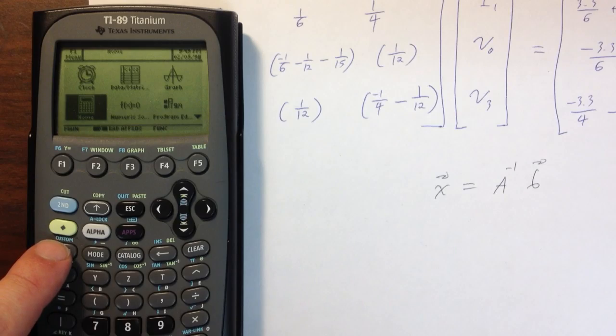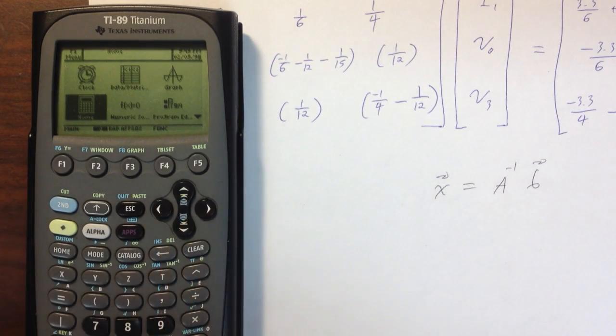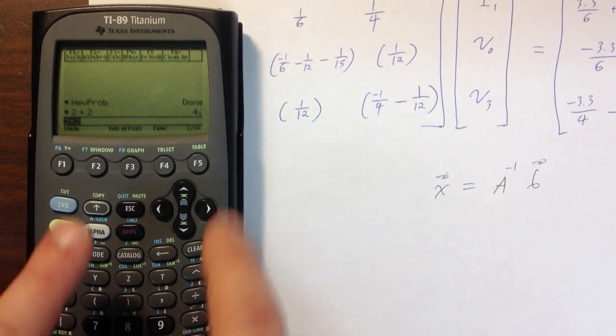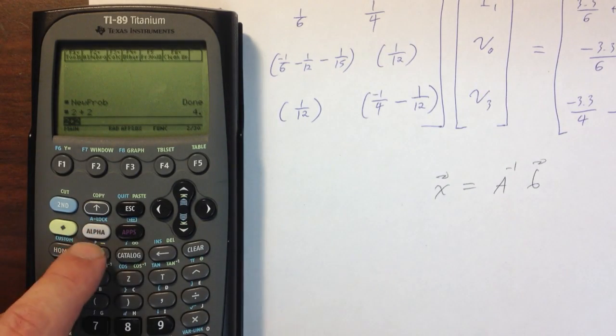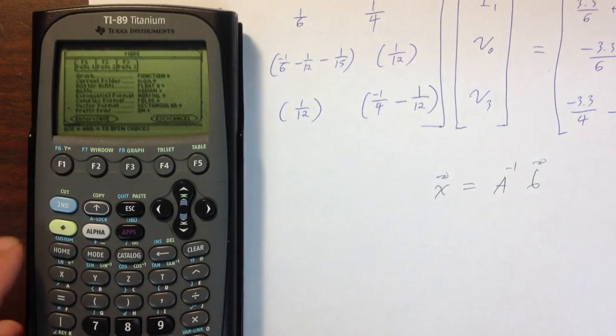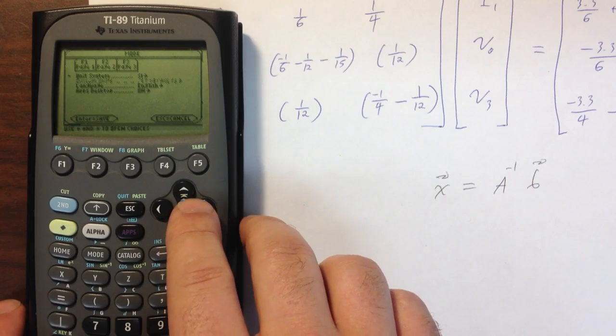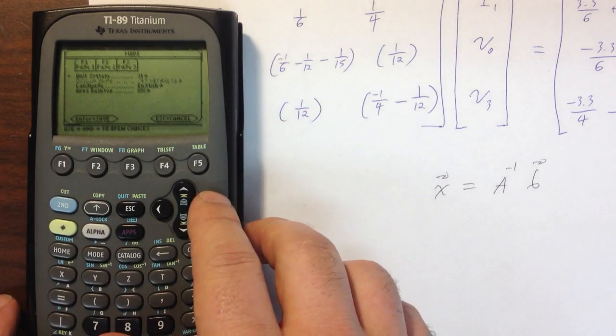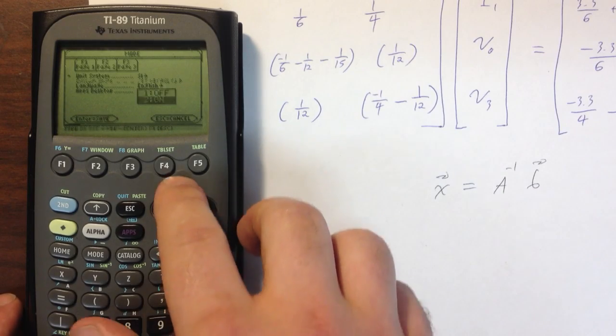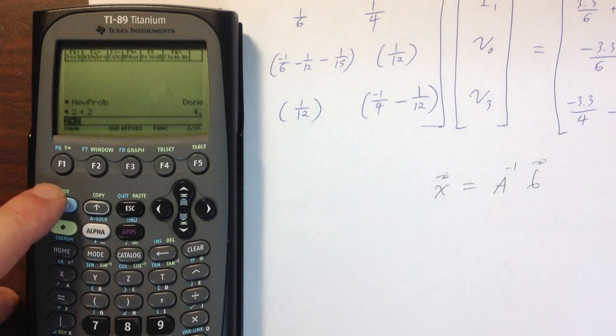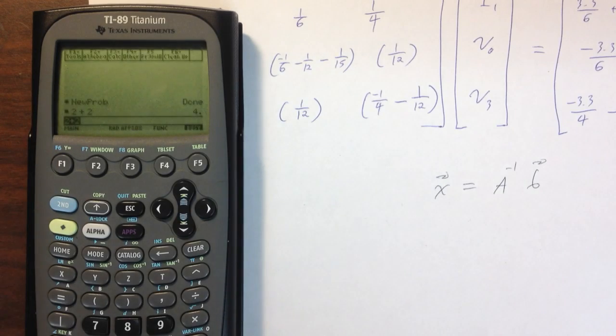If you want to turn off your Apps Desktop so that when you turn on your calculator you just get your command line, go to Mode. I'm going to click my Mode button, and now I'm going to go to the third page by pushing F3. The last option says Apps Desktop. I'm just going to turn that off. I push Enter twice. It has to save the mode. Now if I turn the calculator off and turn it back on, I just get the home screen.